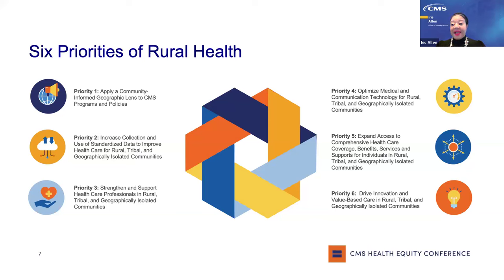Rural framework priority four: optimize medical and communication technology for rural, tribal, and geographically isolated communities. Proposals here could examine telehealth and health information technology. Priority five: expand access to comprehensive health care coverage, benefits, and services and supports for individuals in rural, tribal, and geographically isolated communities, including programs that address long-term services and supports for people with disabilities and/or the elderly. Priority six: drive innovation and value-based care in rural, tribal, and geographically isolated communities. An example could be a proposal that examines disaster preparedness or public health emergencies by states, or proposals that look at CMS innovation models within rural, tribal, and geographically isolated communities.